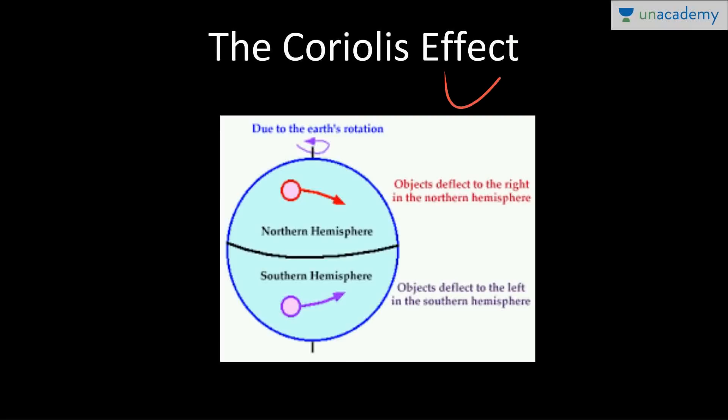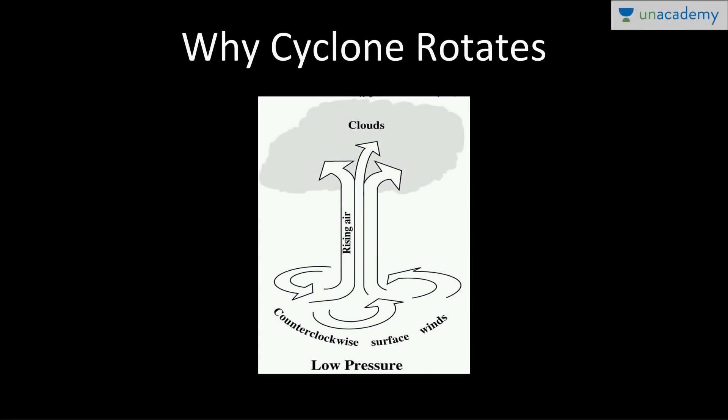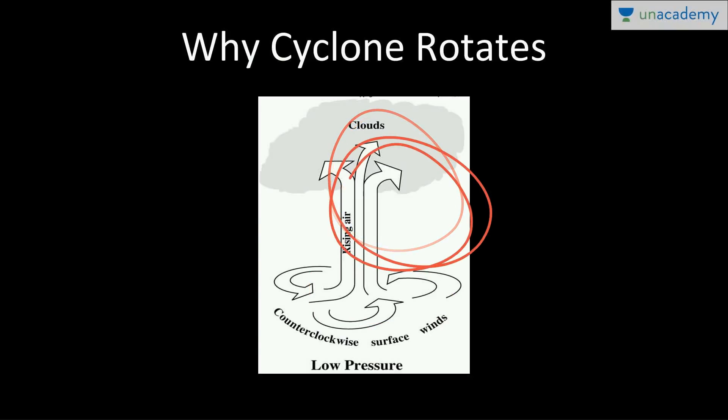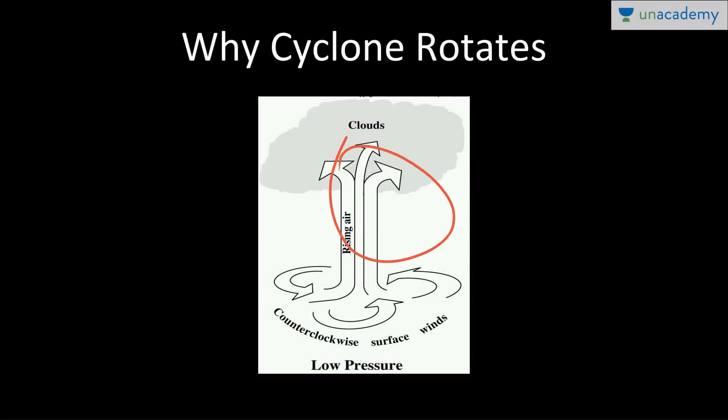Why do cyclones rotate? Because air pressure at the center drops very low, while outward pressure is very high. As air moves from high pressure to low pressure it wants to travel in a straight direction, but the Coriolis effect causes it to turn. That is why in the northern hemisphere rotation is anti-clockwise, and in the southern hemisphere it is clockwise. With no Coriolis effect, cyclones would not rotate.